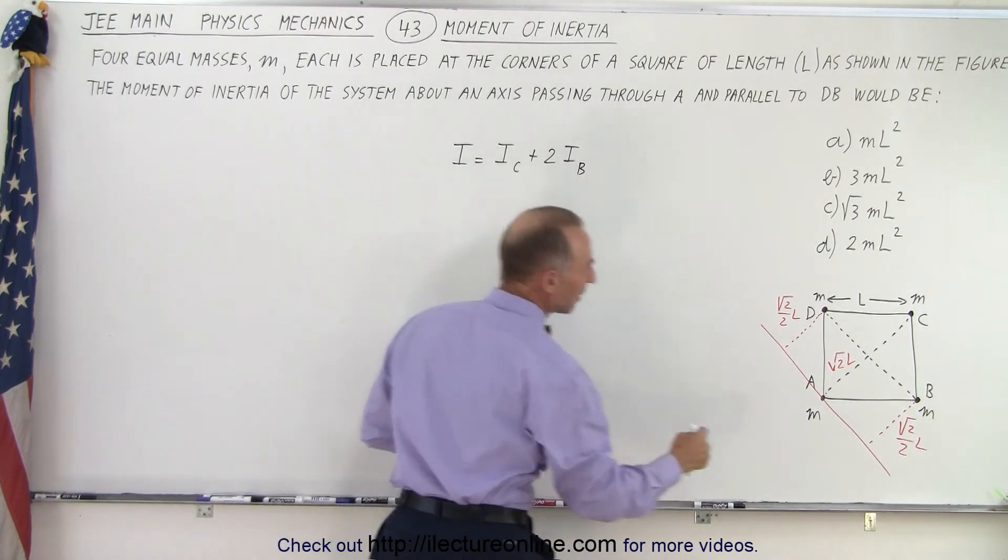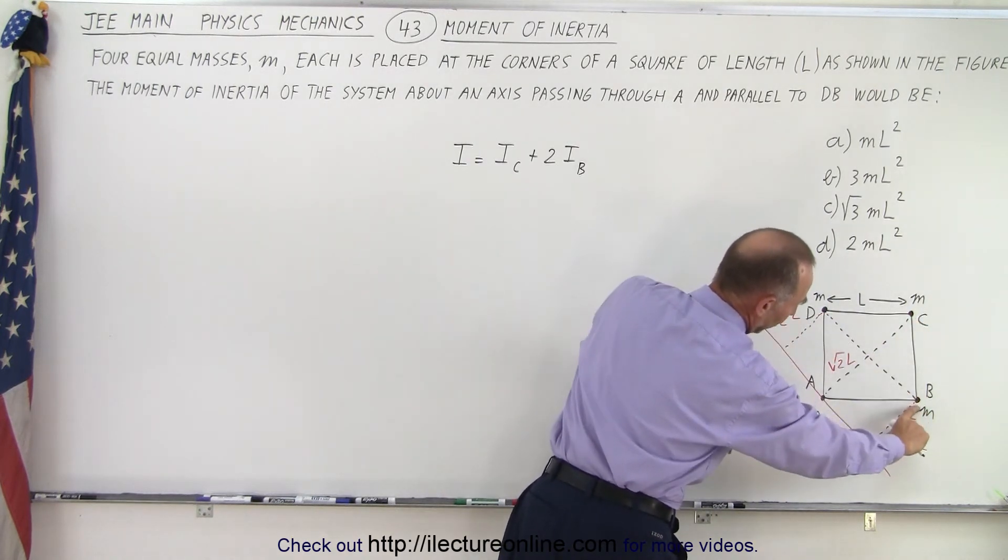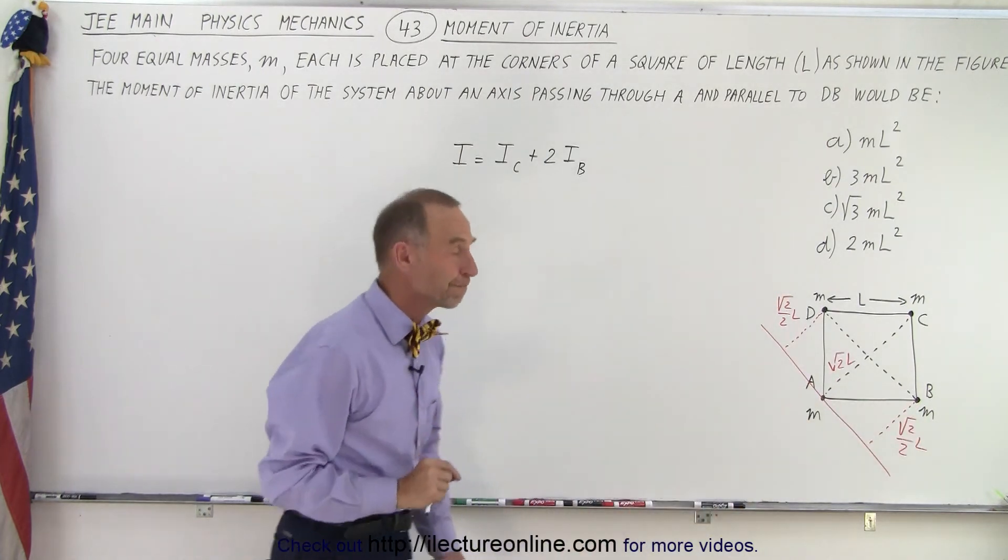Why 2 times I_B? Because these would be exactly the same. So it's the moment of inertia of this one, plus twice the moment of inertia of this one, because these should be the same.